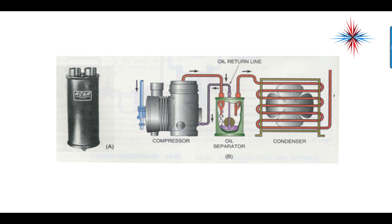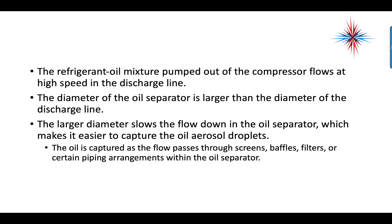We have our discharge line coming out of our compressor, and the discharge line continues on to our condenser. Between them, we place an oil separator. We also have an oil return line that brings the oil back to the compressor.